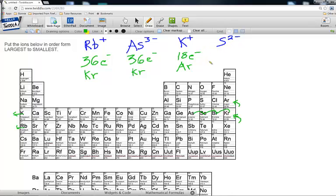Next, S2-. S is here. The 2 minus means it's gained 2 electrons, so it's gone 1, 2, to also look like Ar's electrons. Therefore, it also has 18 electrons or looks like the electrons of Ar.